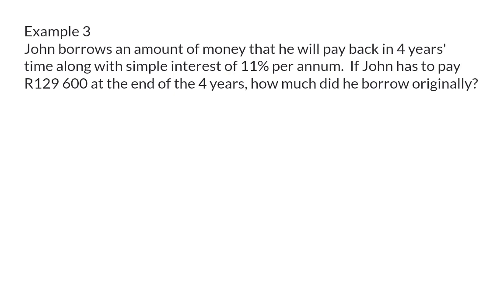Firstly, we need to start off to determine what information was given. Here, an amount was borrowed, and that is our P-value that we then need to determine. Next, they say it will be paid back in 4 years, which will be our N-value. The interest rate is given as 11% per annum, which is the I-value. And he needs to pay back 129,600 Rand, which is the amount plus all the interest, so that is the A-value. We have the A-value, so I am going to use the second formula.